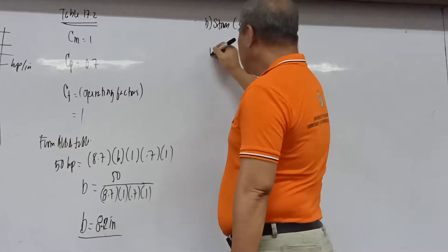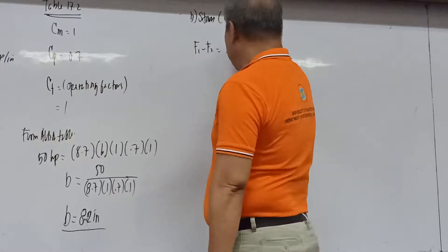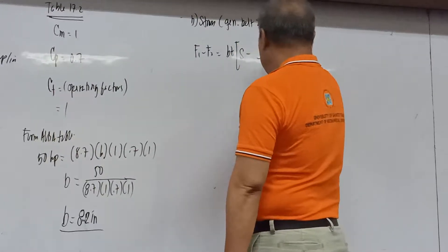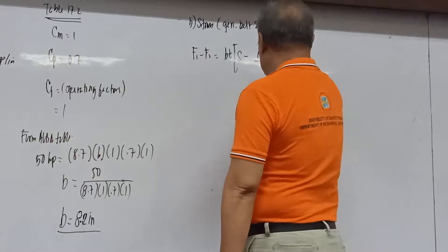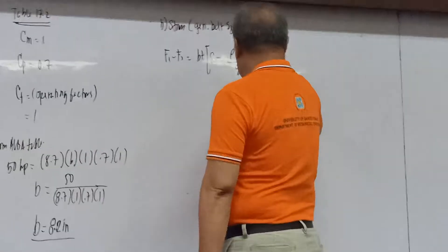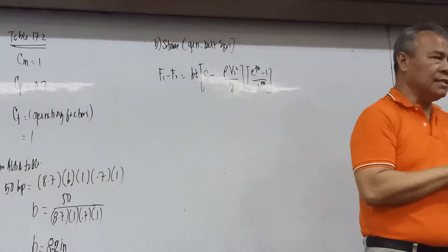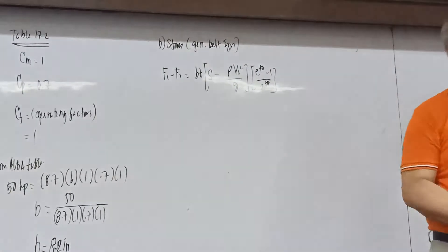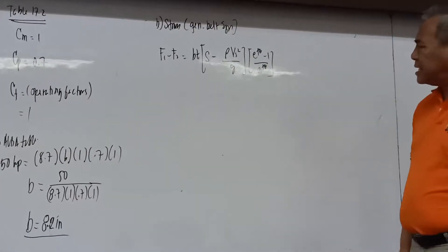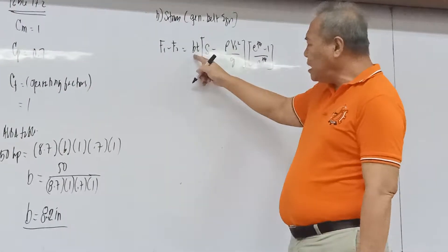The belt speed Vs was already computed as 2,984 ft/min. Converting to feet per second: 2,984 / 60 = 49.73 ft/s. Also, g = 32.2 ft/s². The coefficient of friction f is based on the pulley material, not the belt material.